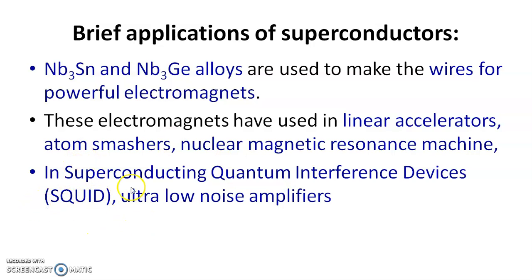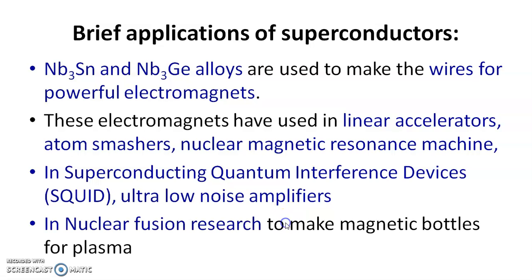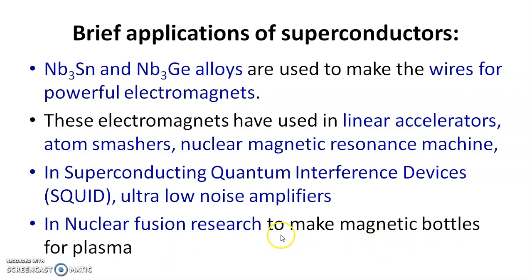Superconductors are used in superconducting quantum interference devices, i.e., SQUID, which are also used in ultra-low noise amplifiers. Superconductors play an important role in nuclear fusion research to make magnetic bottles for plasma. The material of this magnetic bottle is a superconducting material, and these magnetic bottles are used in nuclear fusion research.